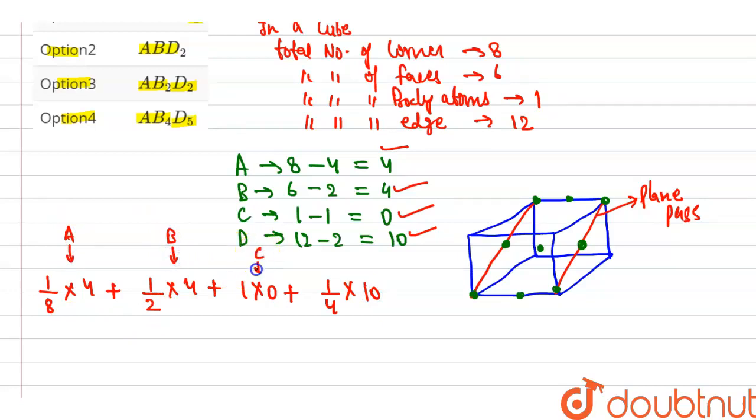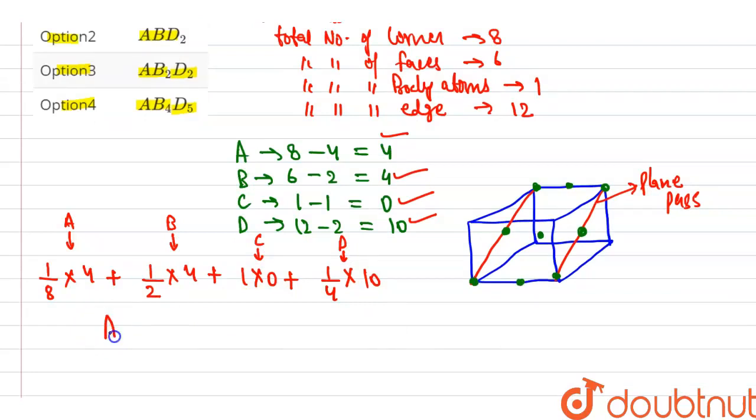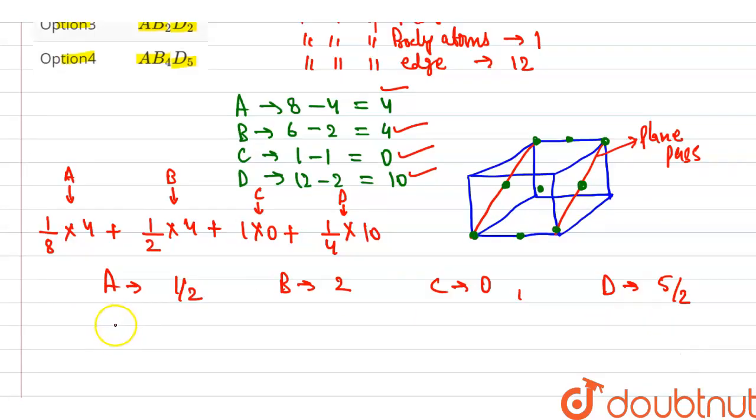So A is 1/2 and B is 2 and C is 0 and D is 5/2. Now the formula of the compound is A 1/2, B 2, and D 5/2. And we know atoms cannot be in fraction.